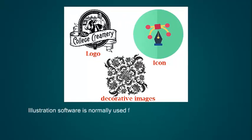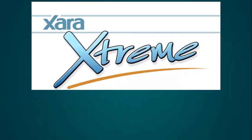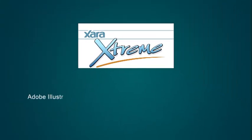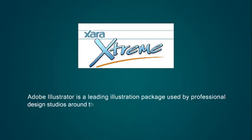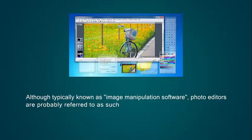Illustration Software. Illustration software is normally used for creating illustration style images. Examples include logos, icons, decorative images, and illustrations. Adobe Illustrator is a leading illustration package used by professional design studios around the world. CorelDRAW is another popular package. Although typically known as image manipulation software, photo editors are probably referred to as such due to their common usage.